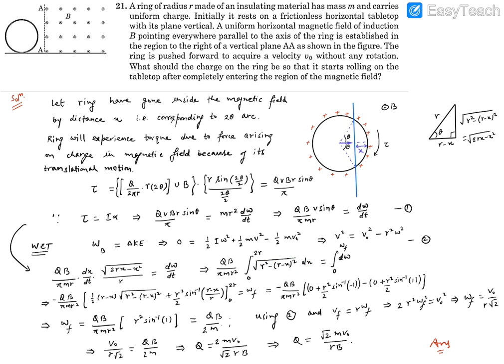We can now apply limits: X runs from 0 to 2R (as the ring goes from not entered to completely inside), and ω runs from 0 to the final value. The integrand on the left involves √(R² − (R−X)²), which matches the standard form √(A² − X²). The standard integration formula is: ½·A·√(A²−X²) + (A²/2)·sin⁻¹(X/A). Using this standard result with the limits 0 to 2R, the right-hand side becomes ωfinal.